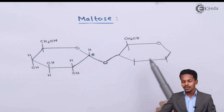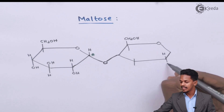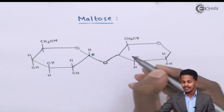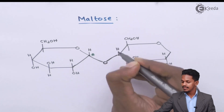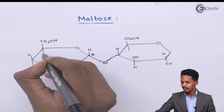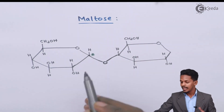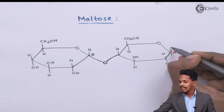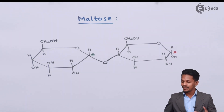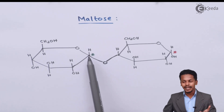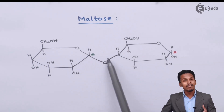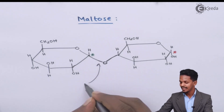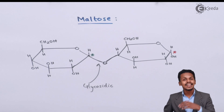Similarly, for the second alpha-D-glucopyranose unit, we get the same configuration: here is hydrogen, here is OH, here is OH, here is H, and to satisfy the valency there is hydrogen with OH on the lower side. We have now identified the anomeric carbon atom in both units. Since this second unit is also alpha-D-glucopyranose, we write H on the upper side and OH on the lower side. According to the definition, there is a linkage from one anomeric carbon atom to the other monosaccharide through an oxygen bond, and that linkage is known as the glycosidic linkage.